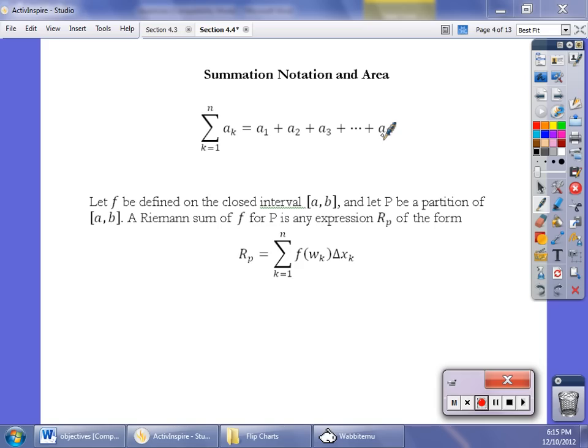What ends up happening with these Riemann sums is we draw a reasonable number of rectangles, like we draw four rectangles or six rectangles or eight rectangles, and you just find the area of the rectangles. That's all you do. A Riemann sum with a partition p is an expression of r sub p in the form where p is the partition from 1 up to n.